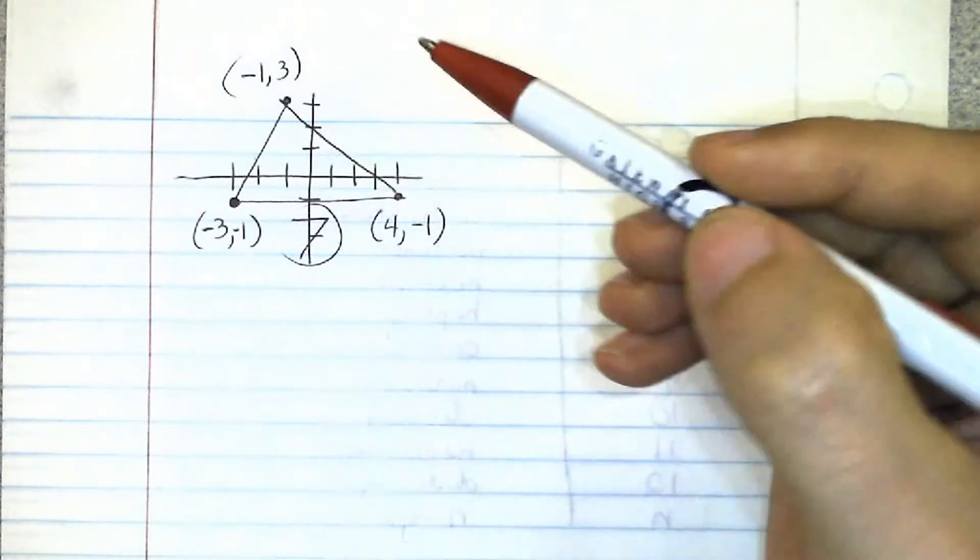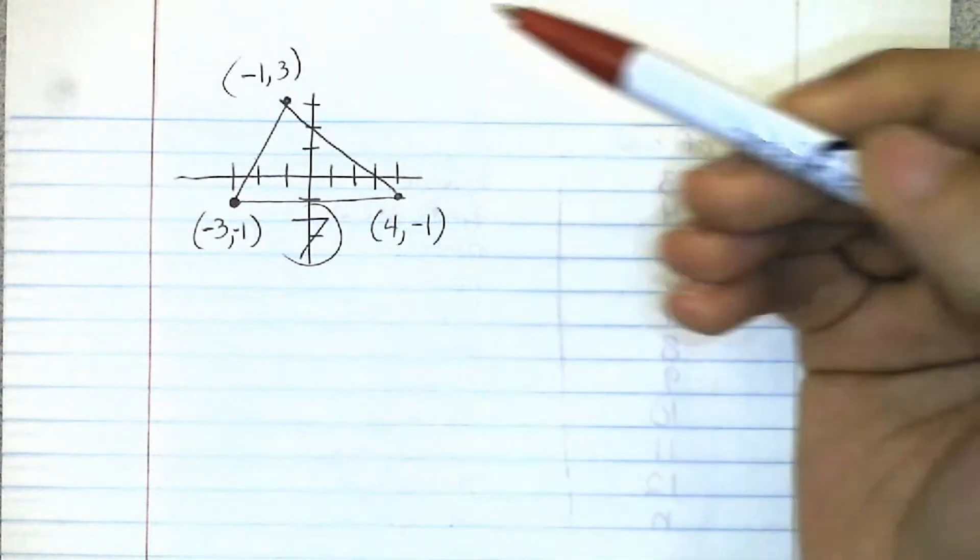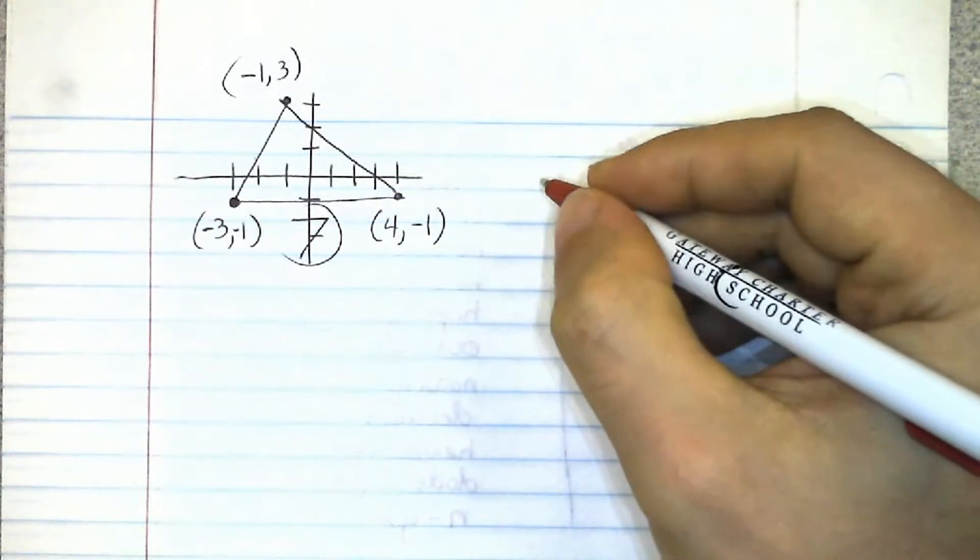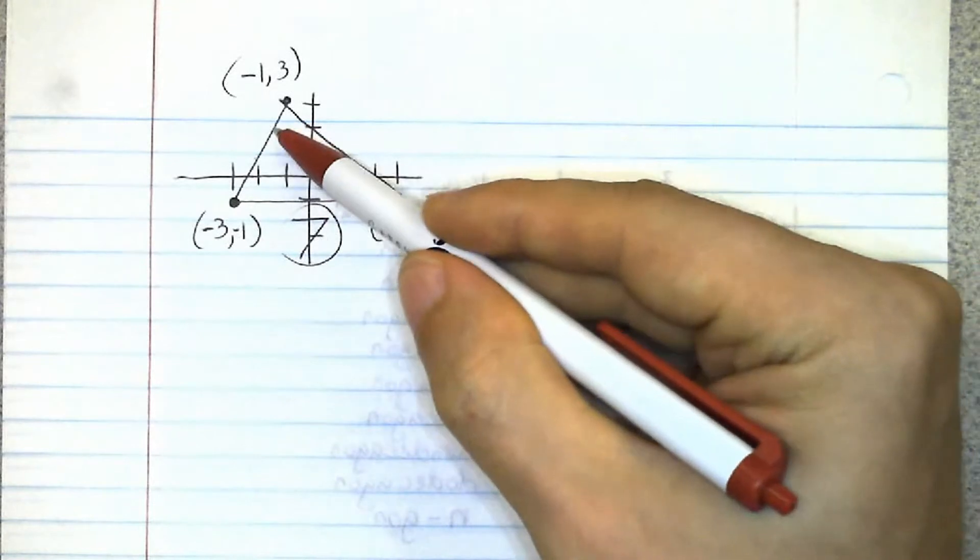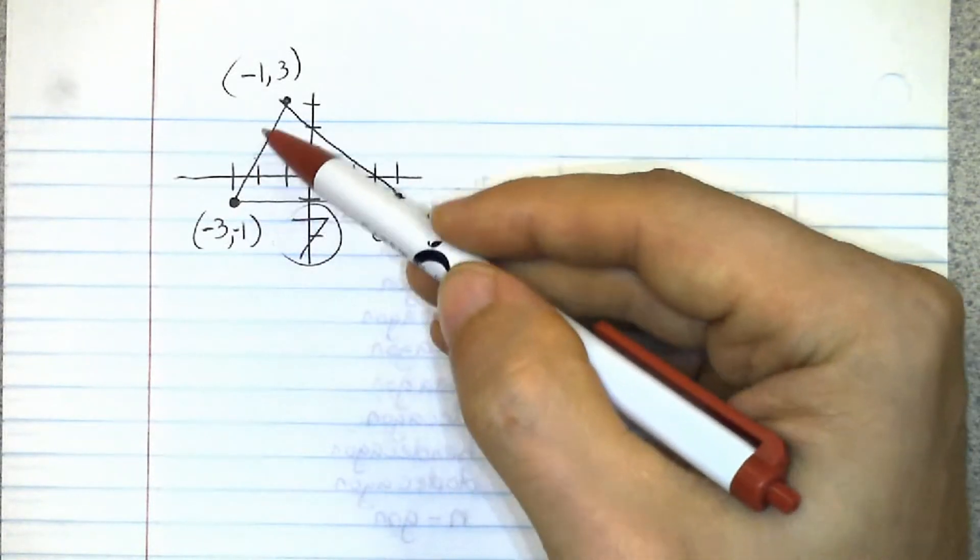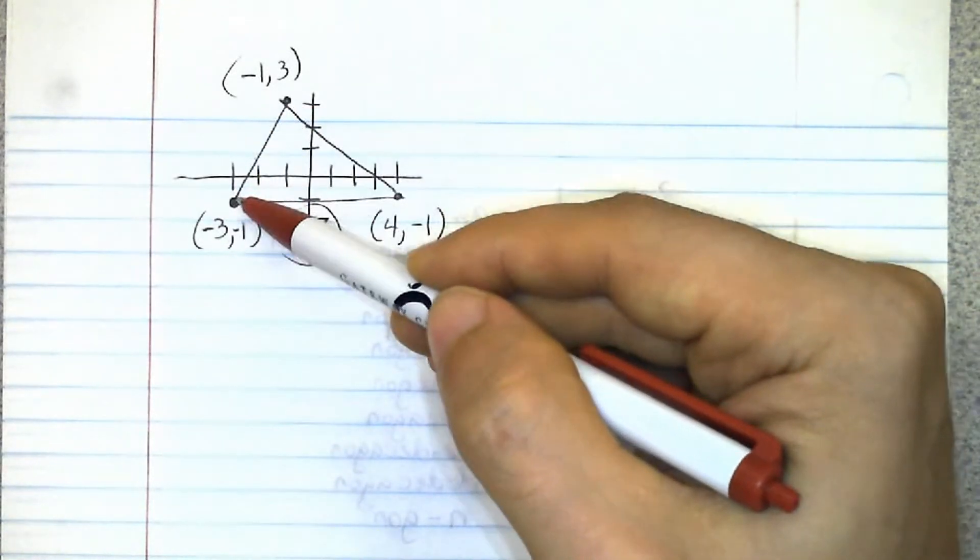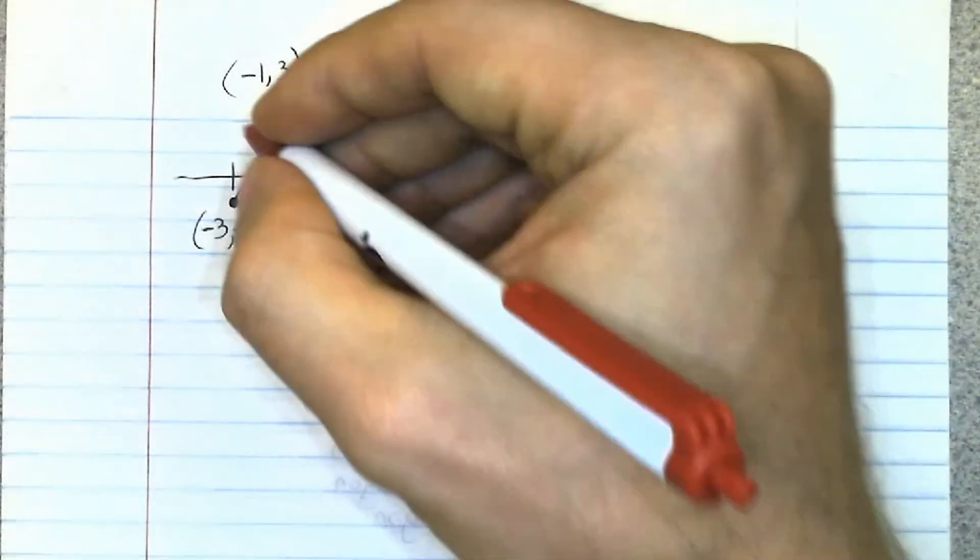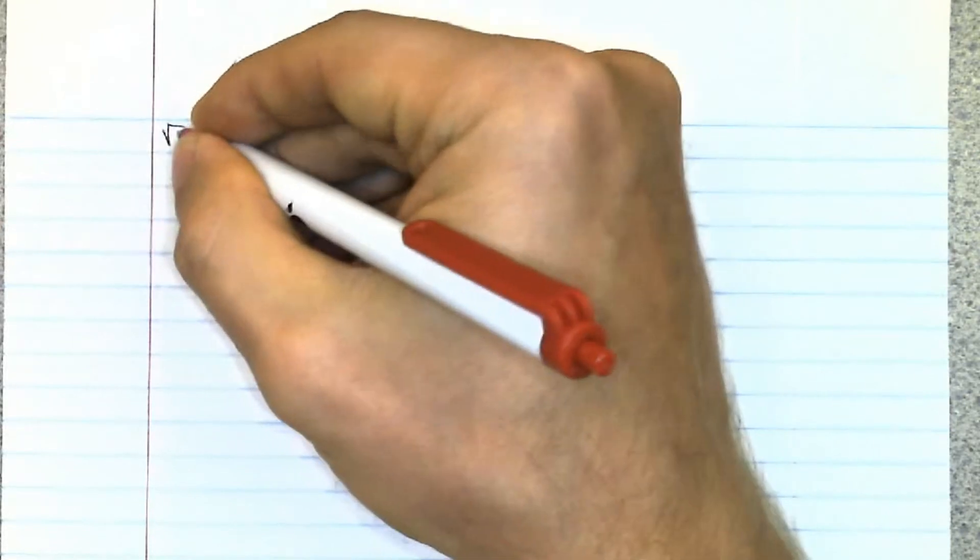Now for these we're going to use distance formula like we used earlier. Right here the distance between (-1, 3) and (-3, -1), since you know distance formula I won't bore you with the details, it comes out to square root 20.